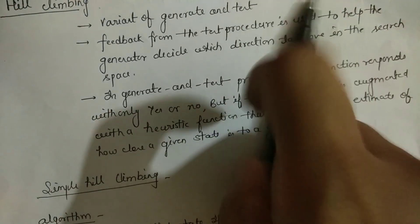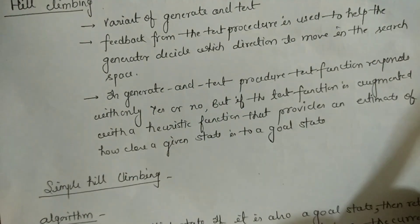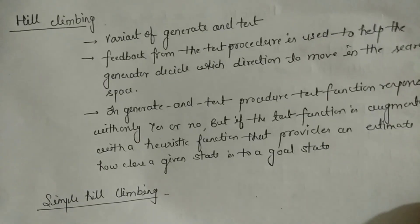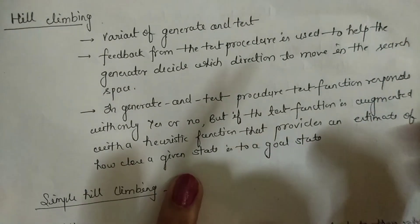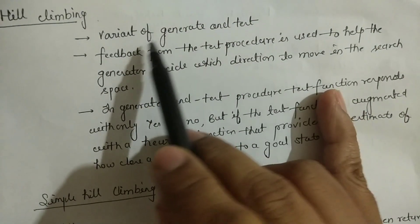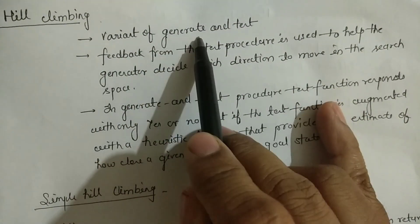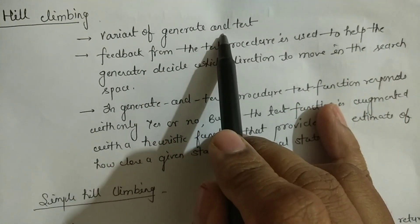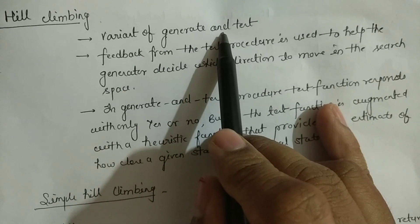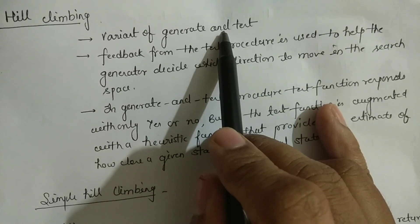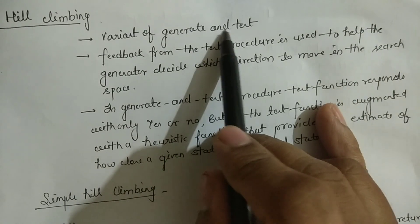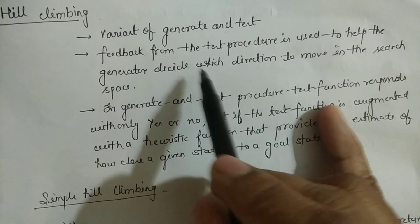Next we will discuss the next algorithm, that is hill climbing. Hill climbing is basically a variant of Generate and Test — it works like Generate and Test, but there is a little variation.